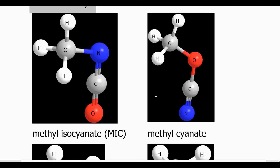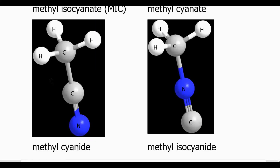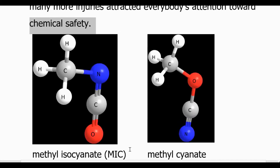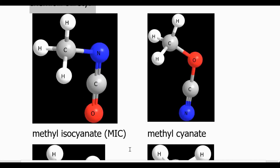Then you have methyl cyanate. In the picture on the left, the CN group with the alkyl group connected to C is called methyl cyanide. And then you have the methyl group connected to the N of the CN group — CN is called cyanide, but if it is N-connected, then it is called methyl isocyanide. Why did I show you all these four pictures? I mentioned about the Bhopal accident. One of these chemicals was responsible for the death of so many people in the Bhopal accident.